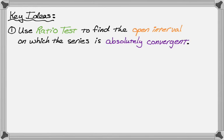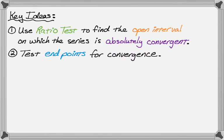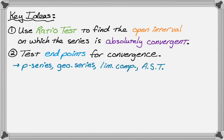That's going to involve a lot of algebra, but the ratio test is kind of fun to use. The second thing we're going to do is test the endpoints of the interval that we get for convergence. When we test the endpoints, we're going to have to use any number of the series tests that you know — for example, a p-series, a geometric series, limit comparison, alternating series test. The harmonic series and the alternating harmonic come up a lot.